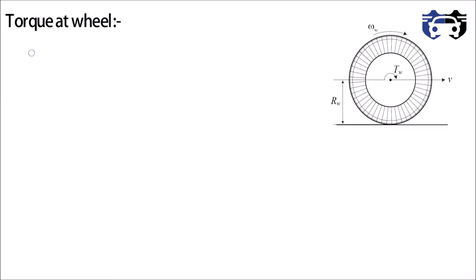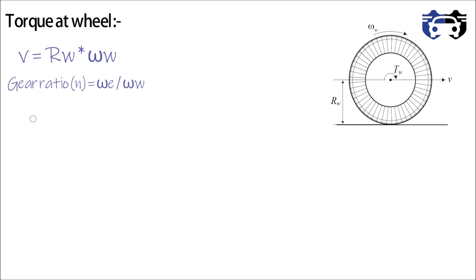Now let's see what happens to torque and speed. The forward velocity v equals rw × omega_w, where rw is the wheel radius and omega_w is the wheel angular velocity. The gear ratio is given by omega_e divided by omega_w. In the drivetrain, two components have gears: the gearbox and the differential. So the overall gear ratio is Ng × Nd, where Ng is the gearbox ratio and Nd is the differential ratio. From this, omega_w equals omega_e divided by (Ng × Nd).